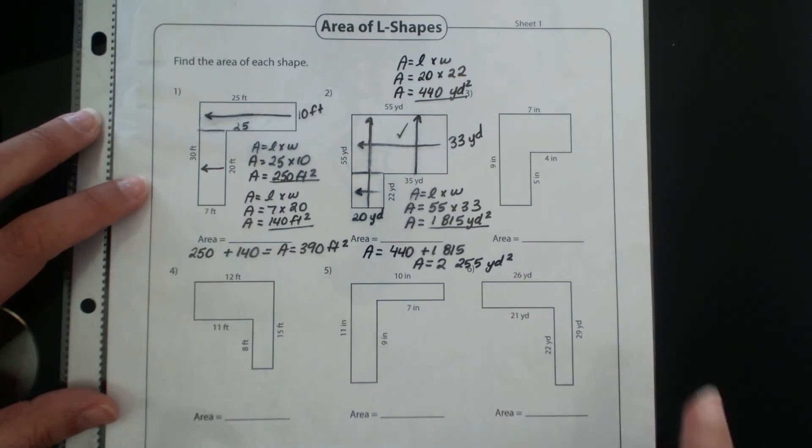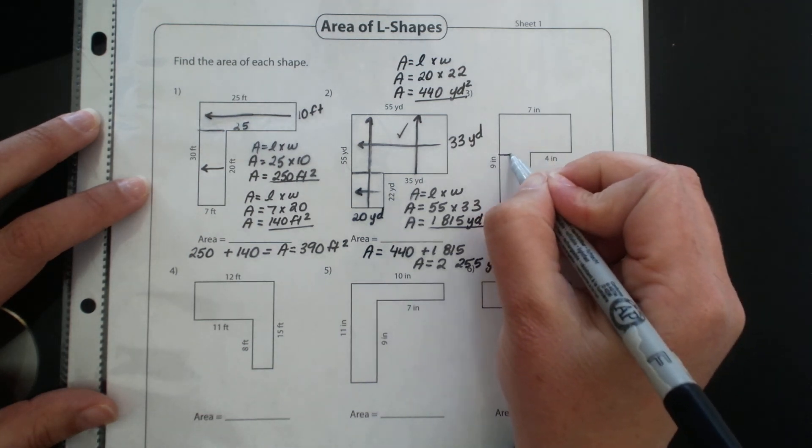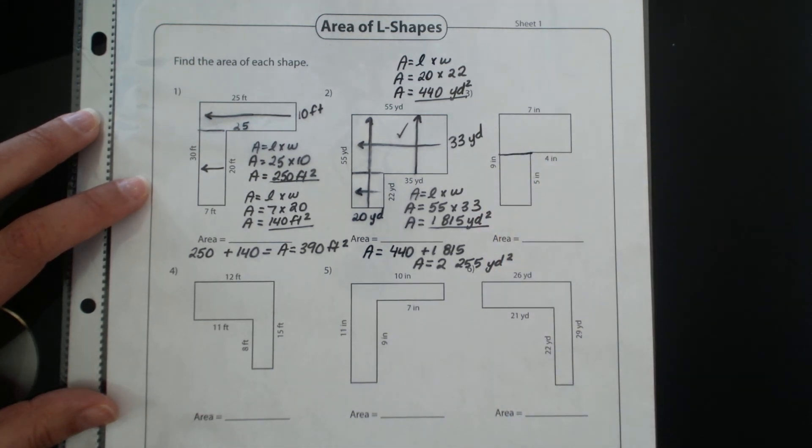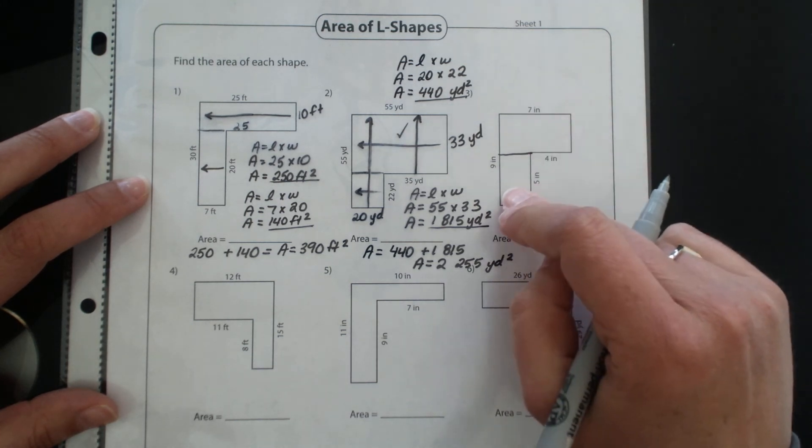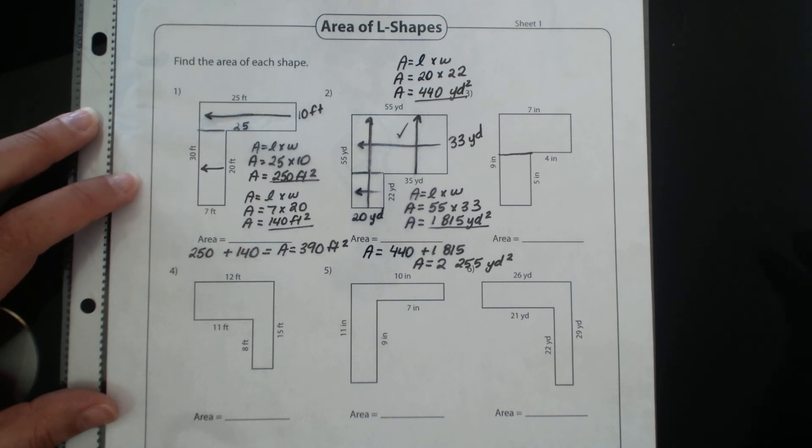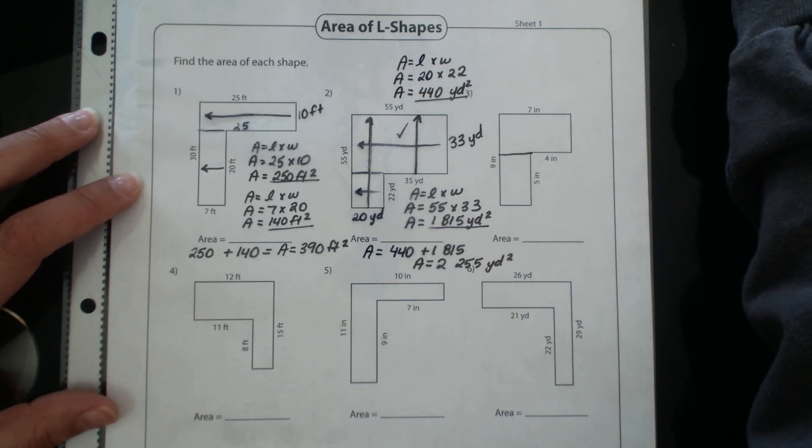Hopefully that helps you with the next ones, but always remember to find those shapes inside shapes. And these ones will all be two steps, so you will have to calculate two different rectangles and then add your areas together. Good luck.